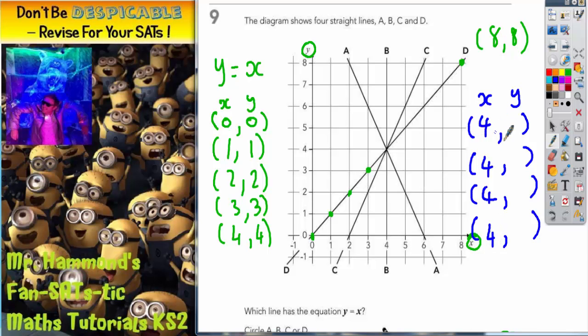So we can have 4 across 0 up. 4 across 1 up. 4 across 2 up. We can even have 4 across 8 up. But the X coordinate, the first bit of the coordinate, has got to be 4. So let's plot those and see what we get.